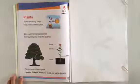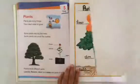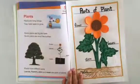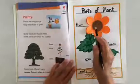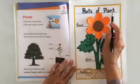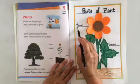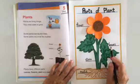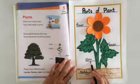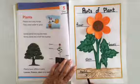Now look at this picture. Parts of plant: flower, leaves, stem and roots.